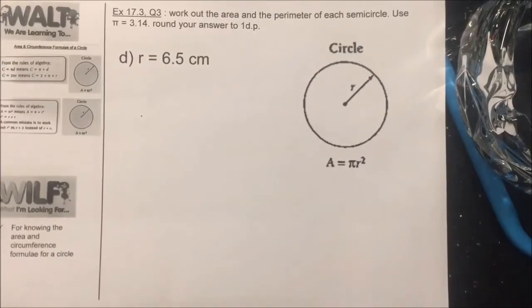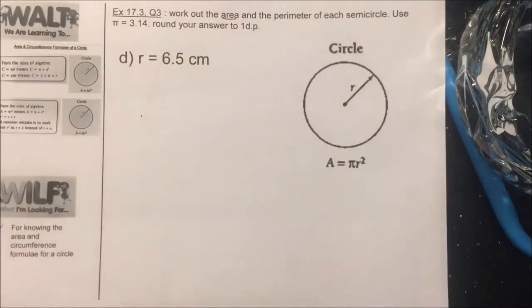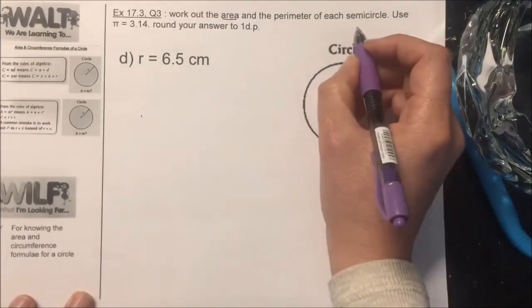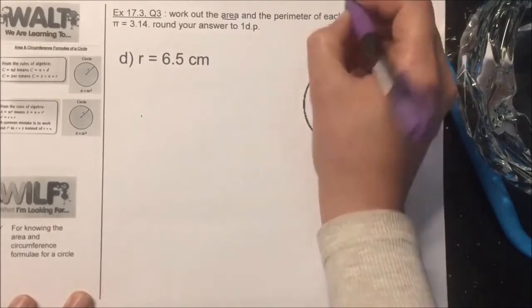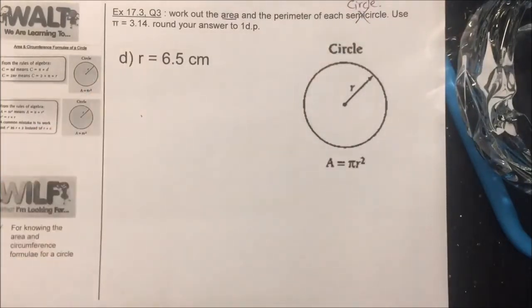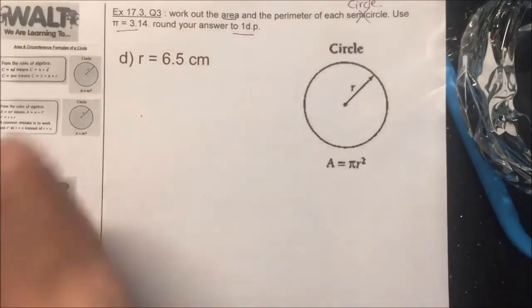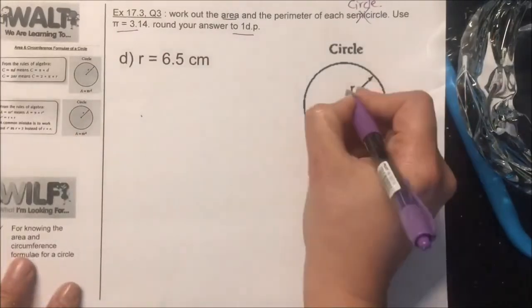Hi there, so we're finding the area of this circle. Work out the area and the perimeter. I'm going to start with the area so here of the circle and use pi as 3.14 and then you round the answer to one decimal place.